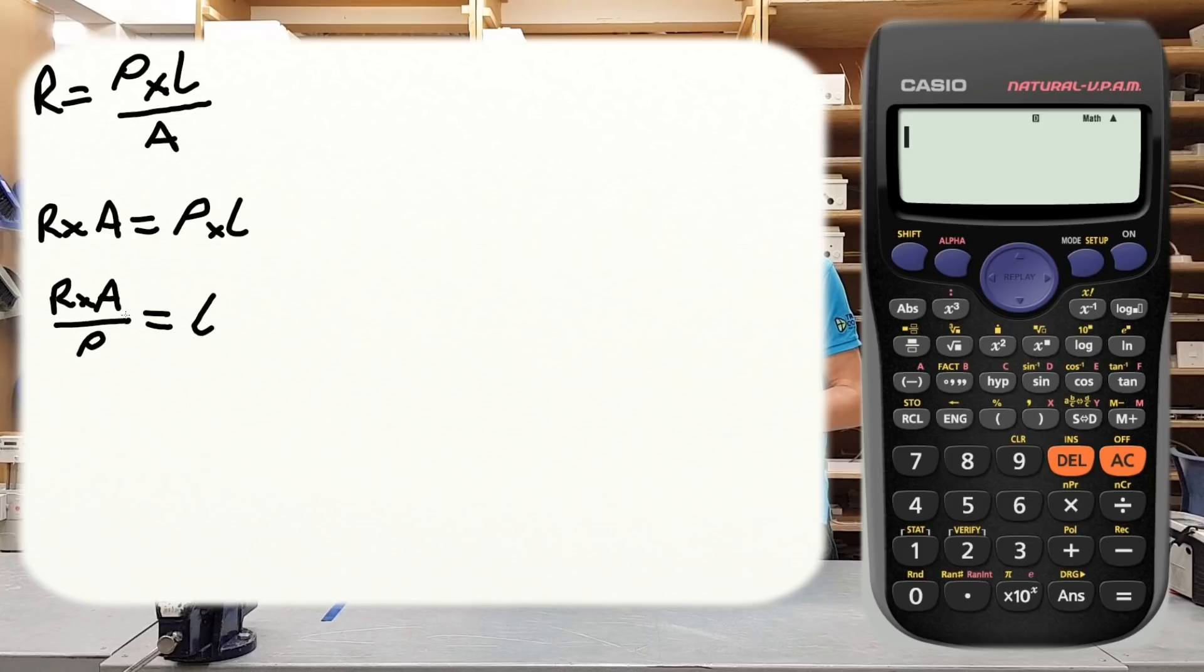But we might look at this formula and think, well it's the wrong way around, we're used to seeing the subject on the left hand side. So let's just swap this over, we'll just mirror this: L = R × A / ρ. Hopefully at this point in your studies you're comfortable with the idea that in algebra, if we've got two letters that are just sitting side by side like that, we know that we need to multiply those two together. That's what that means. So the formula that we're going to use is L = R × A / ρ.